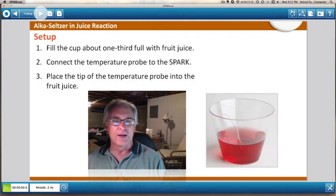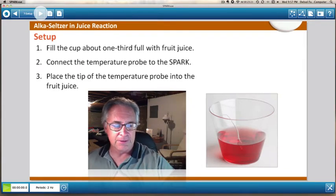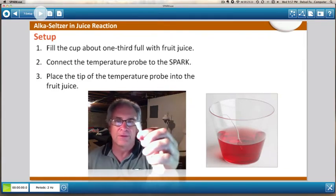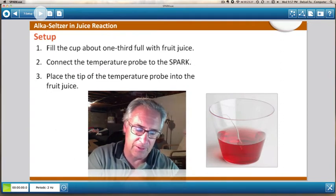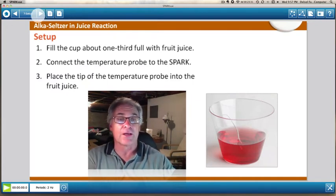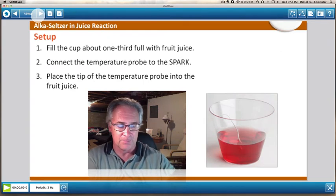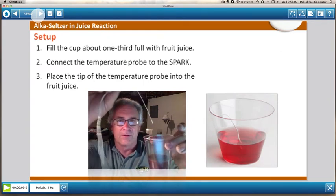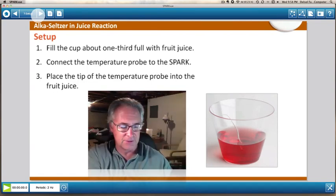All right. We filled the cup up with a one-third amount of fruit juice, just like I did here. We're going to now connect this end of your fast response temperature probe to the data logger. That's what I'm doing right now. And we're going to connect the temperature probe to Spark as we did. And then we're going to place the tip of that temperature probe right into the juice. I'm going to set it down for just a second.